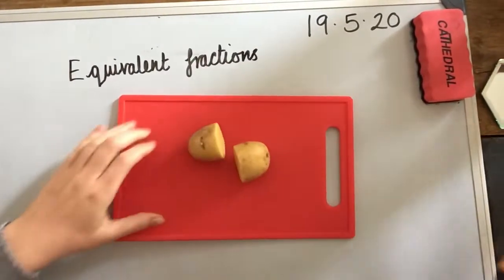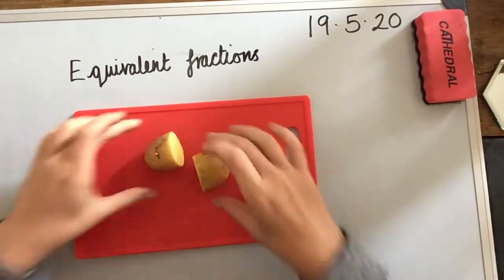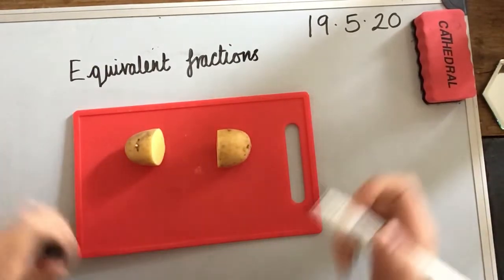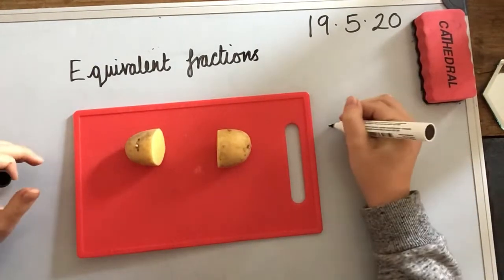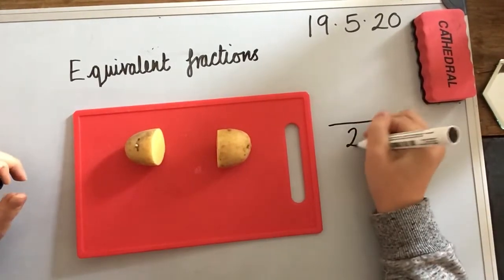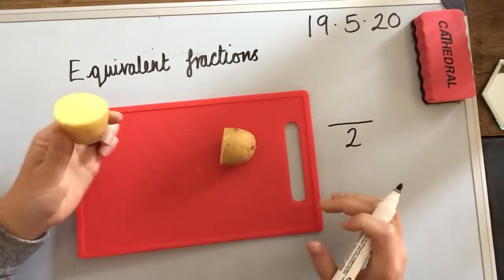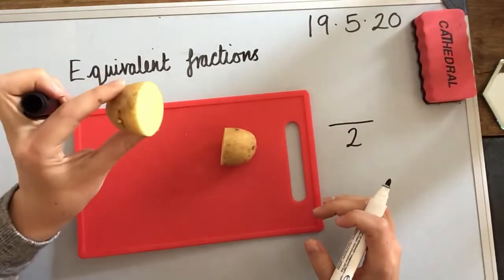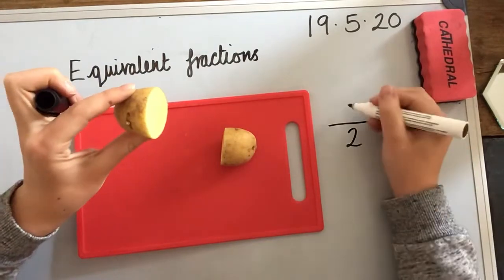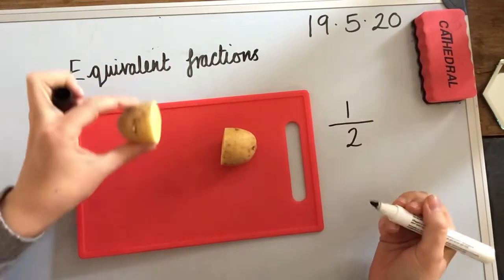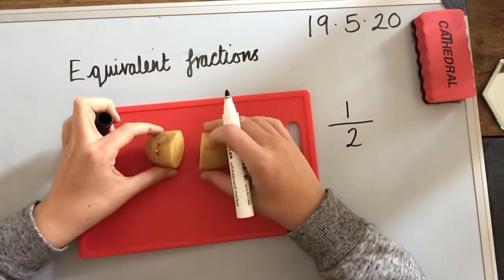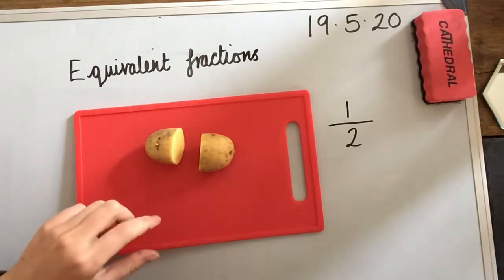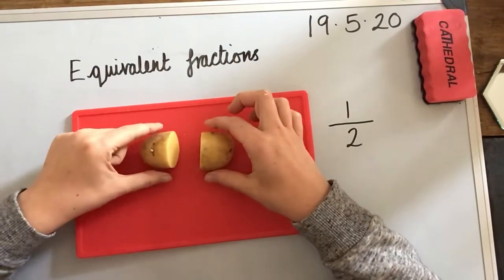So, I've chopped it right down the middle, so I've got two equal parts. That would be my denominator. I've got two equal parts, but this is just one of the equal parts. So, we'd call this one half. I'm sure you already knew that. So, I've chopped my potato in half.